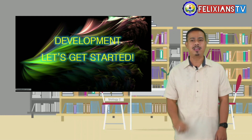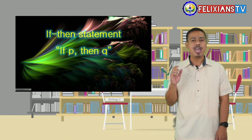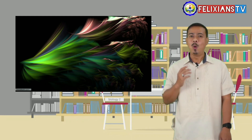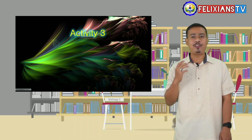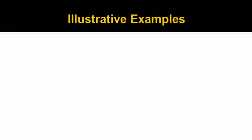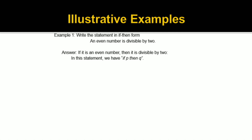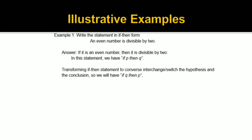Recall that an if-then statement is denoted by the symbol if P, then Q. We will now proceed to our next activity — the three ways of transforming an if-then statement. Example number 1: Write the statement in if-then form. 'An even number is divisible by 2.' Answer: If it is an even number, then it is divisible by 2. In this statement, we have if P, then Q. Transforming the if-then statement to converse, we interchange or switch the hypothesis and the conclusion, so we will have if Q, then P.